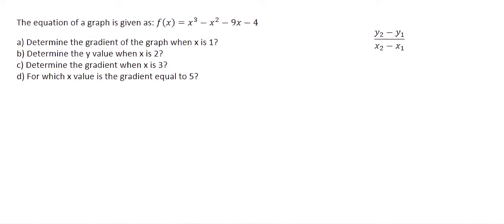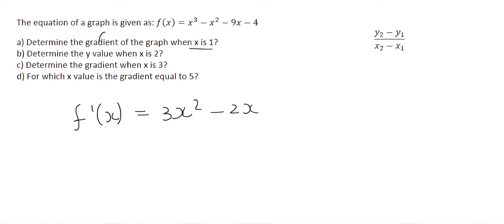Question A says: determine the gradient — a.k.a. the first derivative — of the graph when x is equal to 1. To work out the gradient, you need to get the first derivative. So I'm going to take the first derivative of the given equation, and that's going to be 3x squared minus 2x minus 9.